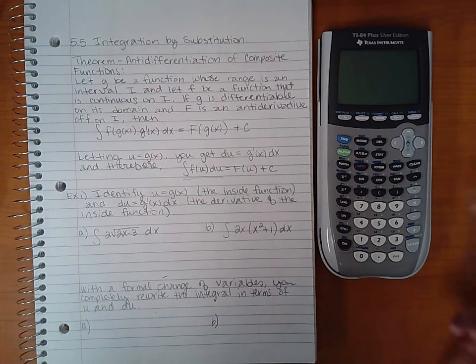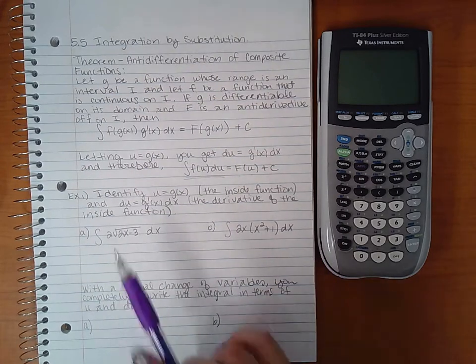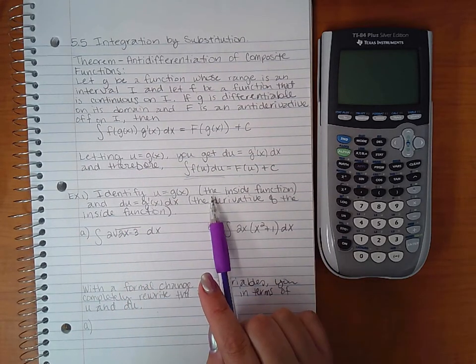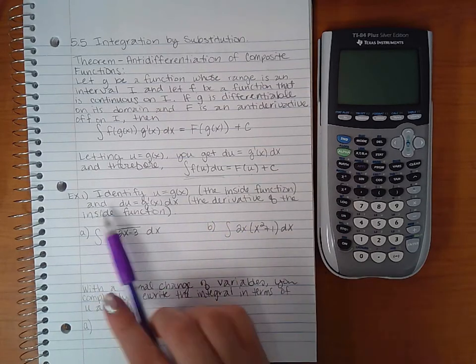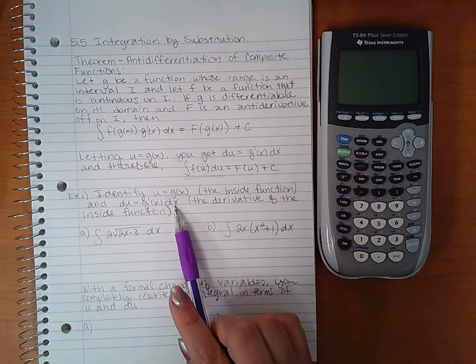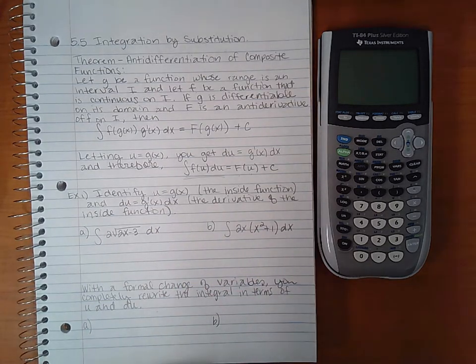For the first few examples in the WebAssign, all they want you to do is identify u, g of x - that's the inside function - and then go ahead and find du, which would be g prime of x dx. That's just the derivative of the inside function.